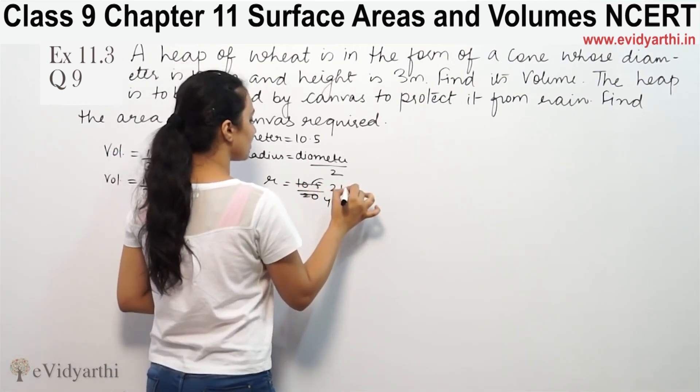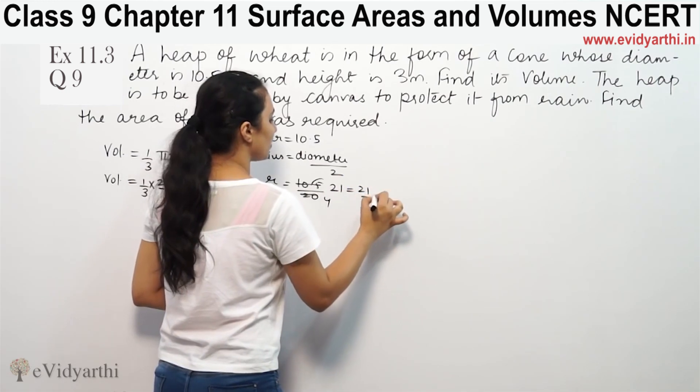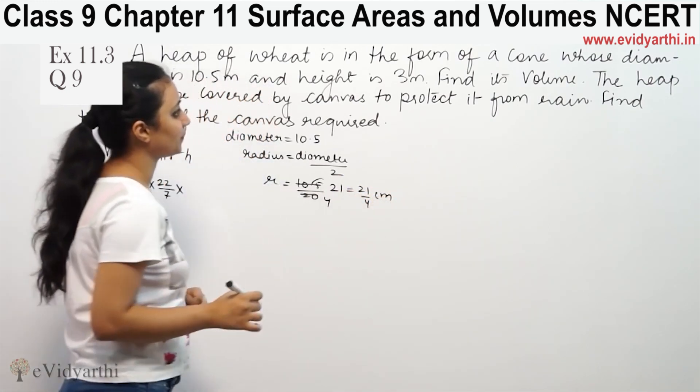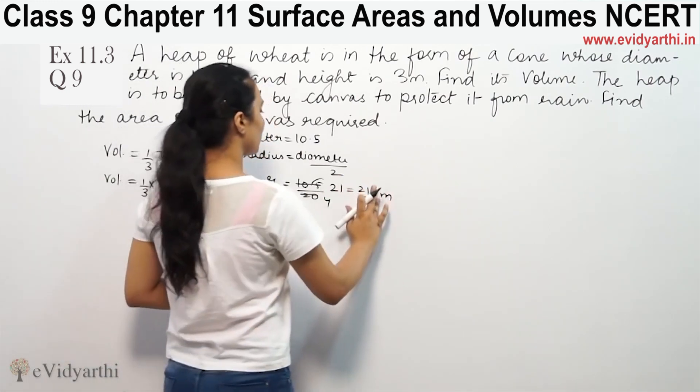So radius will be equal to 10.5 by 2. Removing the decimal, we get 105 by 20, which simplifies to 21 by 4 meters.